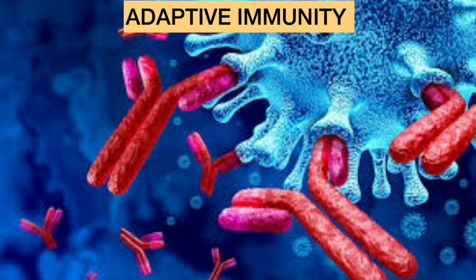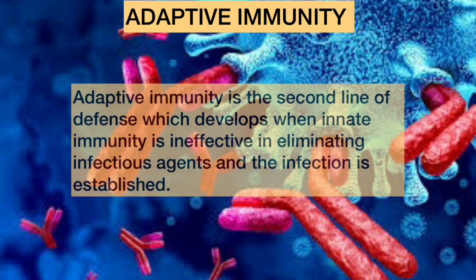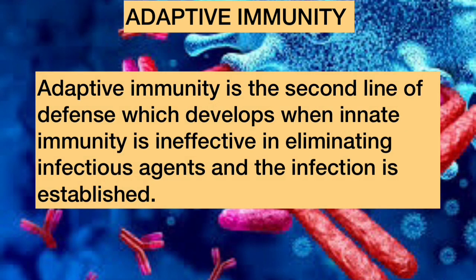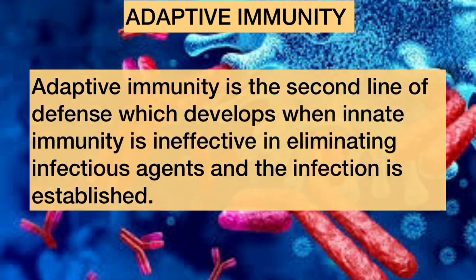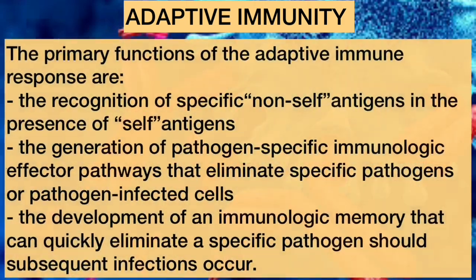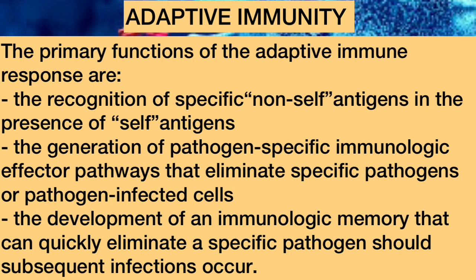Moving on to adaptive immunity. Adaptive immunity is the second line of defense, which develops when innate immunity is ineffective in eliminating infectious agents and the infection is established. The primary functions of the adaptive immune response include, firstly, the recognition of specific non-self antigens in the presence of self-antigens, where the non-self antigens refer to the antigen of the invading pathogen.